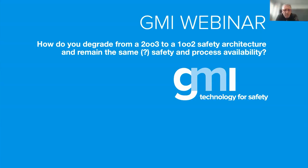Welcome everybody and thanks for joining this webinar. Today we have a specific subject dealing with functional safety — a specific topic touching on architecture, safety and availability: what happens when a failure occurs and what is the status of safety and availability. Before we go through the content, I would like to thank all the participants — thank you very much for being with us.